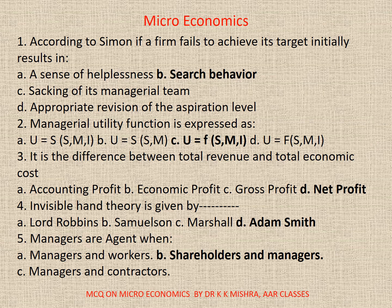Question 4. Invisible hand theory is given by — A. Lord Robbins. B. Samuelson. C. Marshall. D. Adam Smith. Correct option is D. Adam Smith.